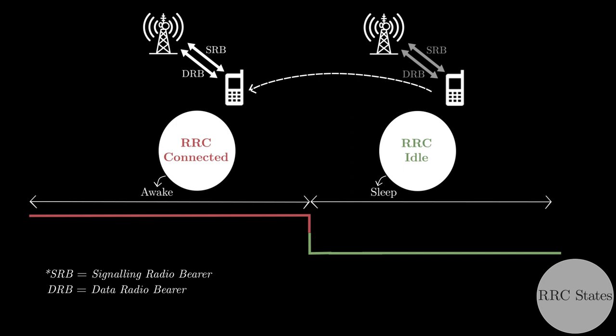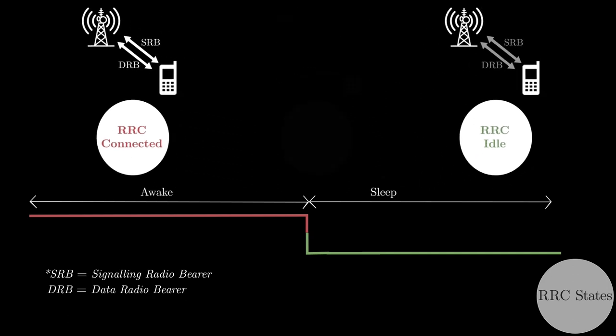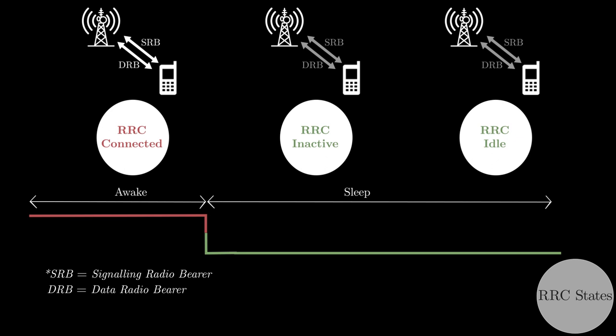To reduce the latency, 5G introduced an intermediate state called RRC inactive. In RRC inactive state, UE's SRB is connected, but DRB is released. RAN can manage the switching between RRC inactive and RRC connected state much faster without involving core network.